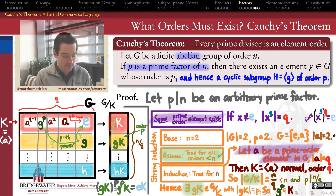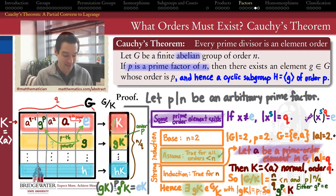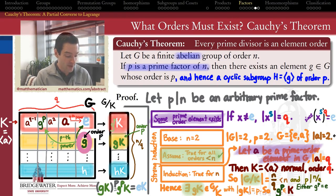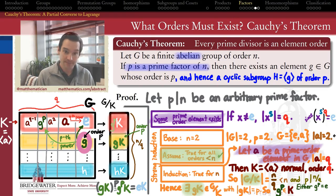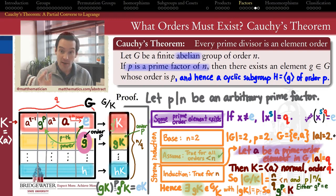We need a plan to cover both possibilities. In the first case, if g^P happens to equal the identity, then g itself is an element of order P: it's non-trivial (since it came from a different coset than the identity), its P-th power is the identity, and since P is prime, the order of g must equal P. So if we get lucky and g^P is the identity, then g is our desired element of order P.